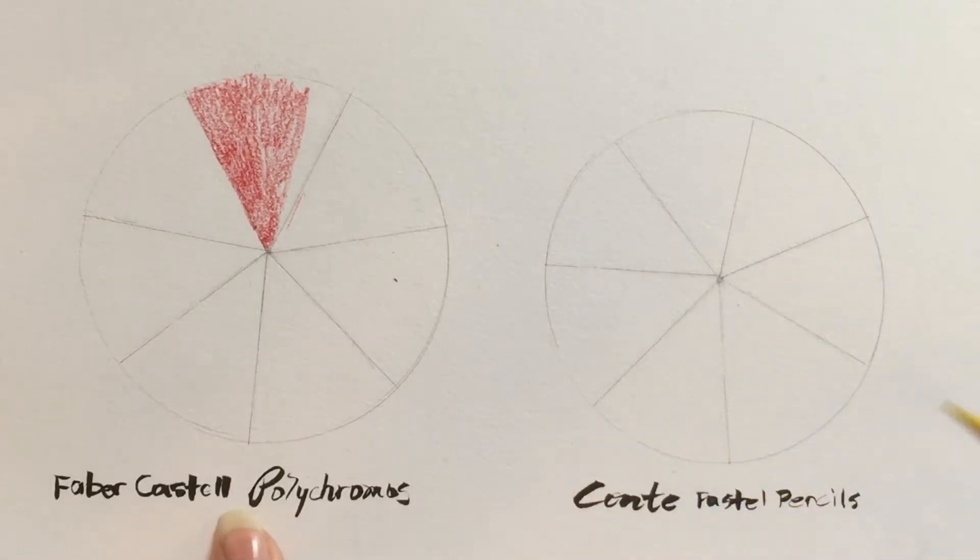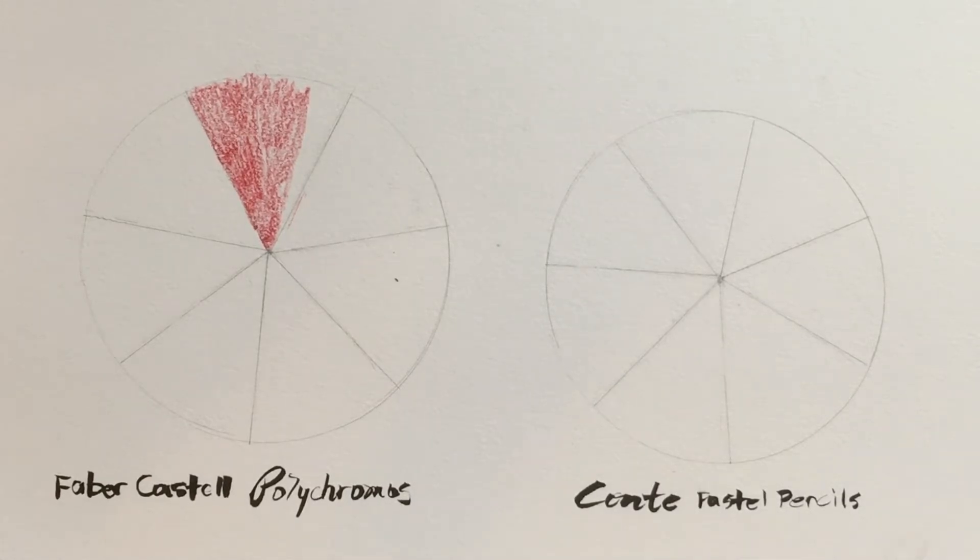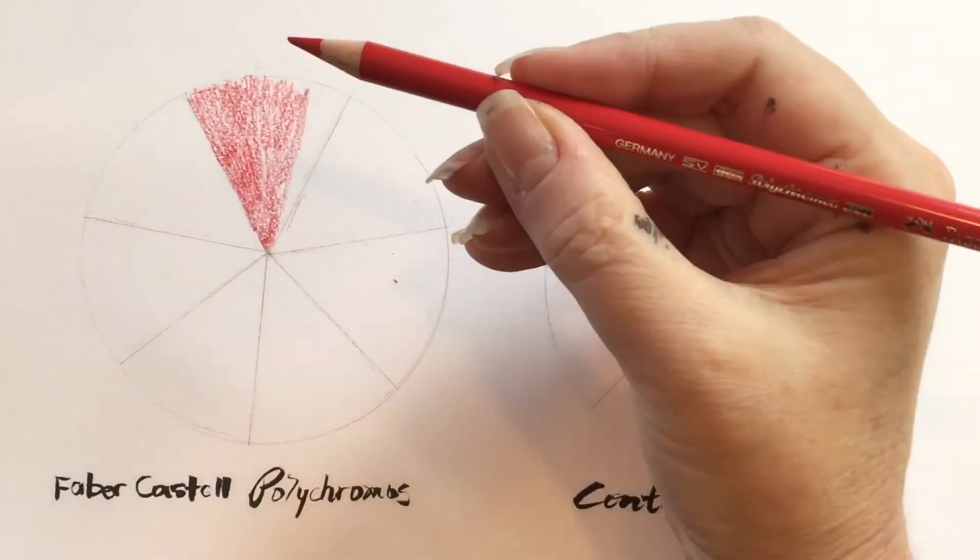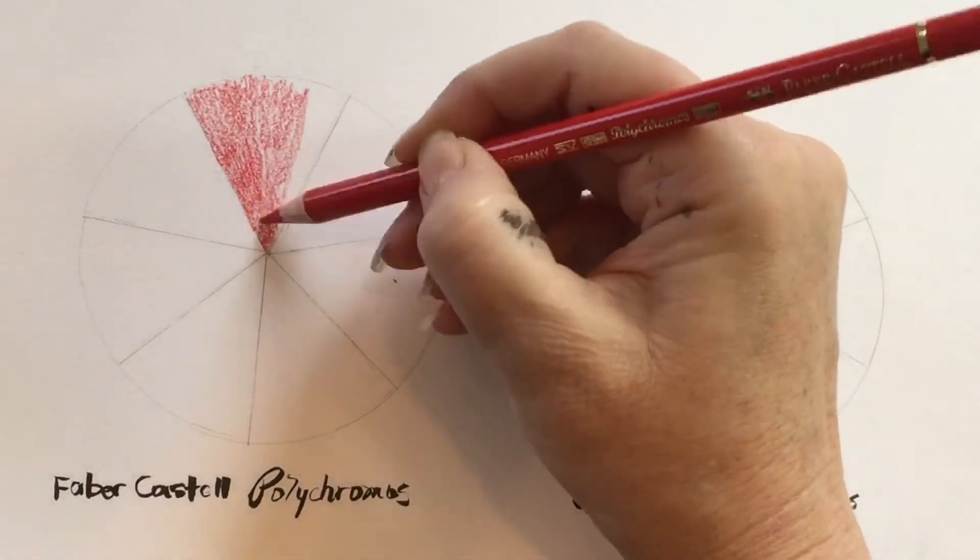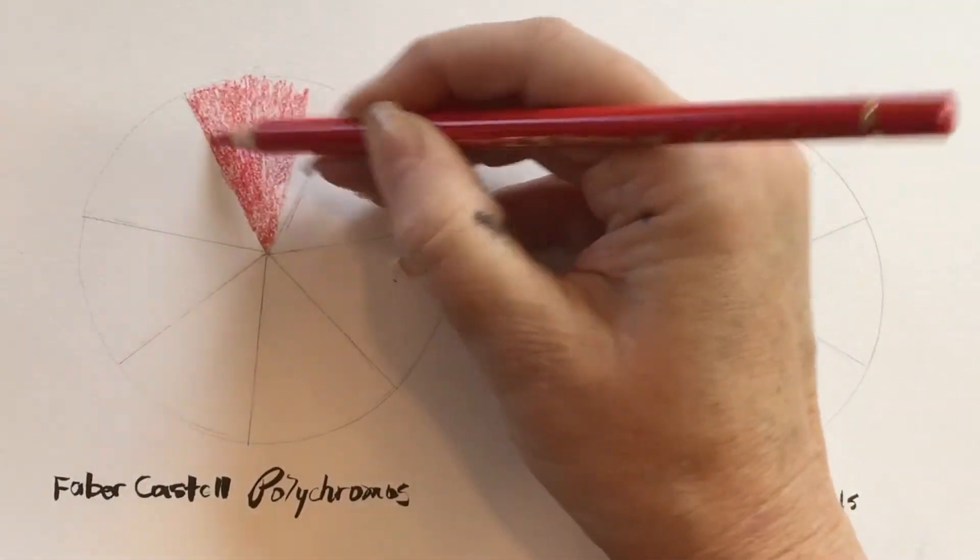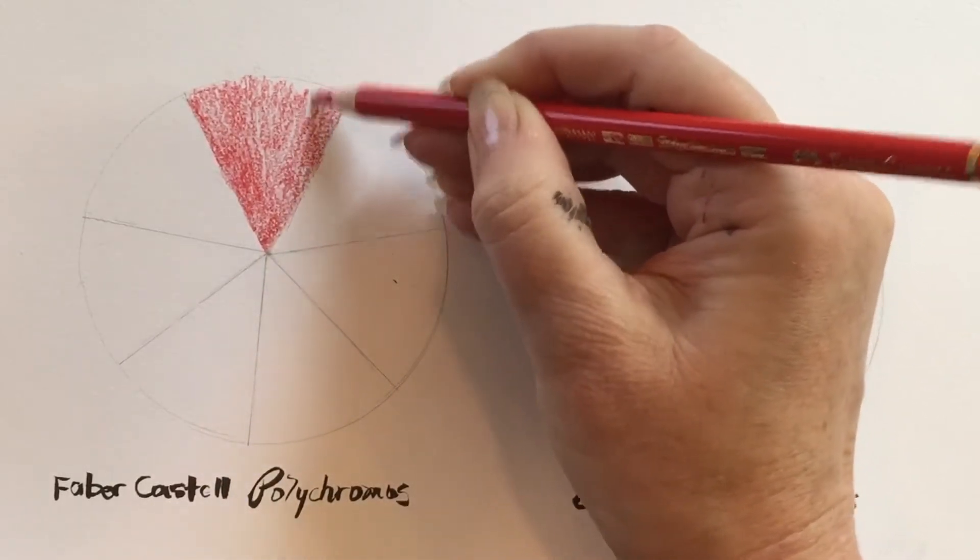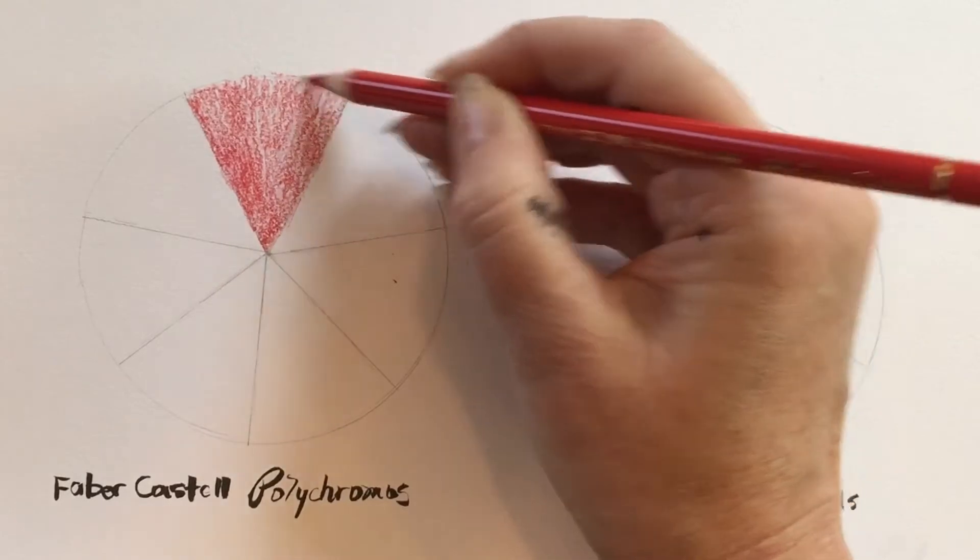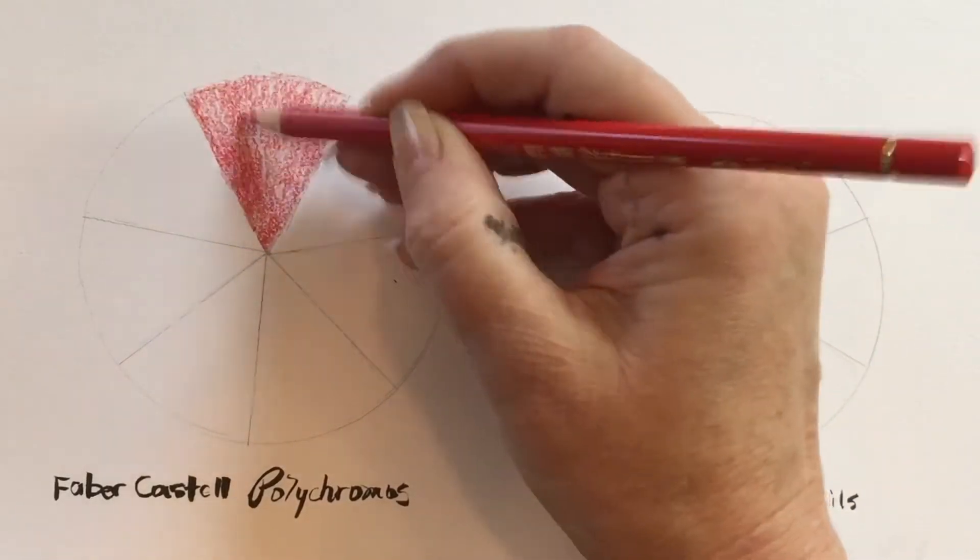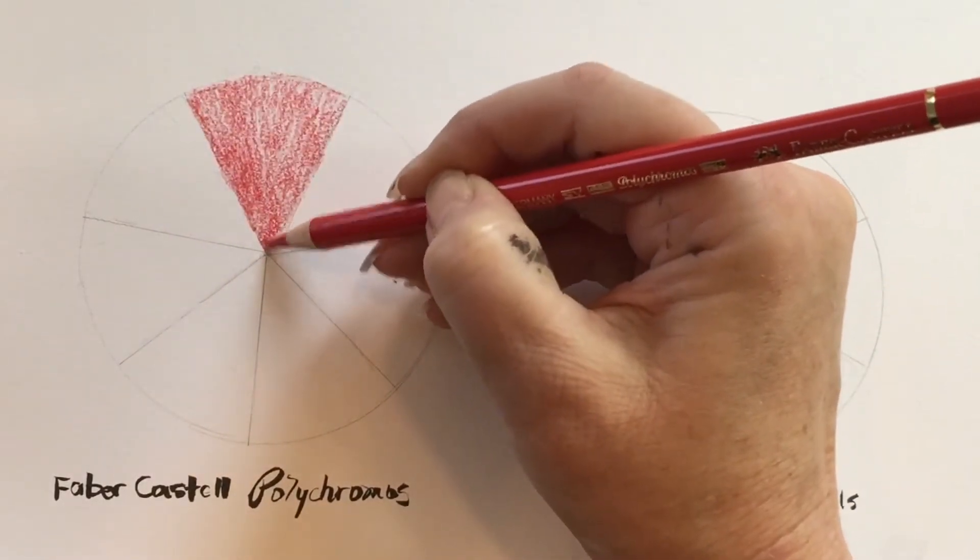I'm going to compare the Faber-Castell Polychromos pencils to the Conti Pastel pencils. I know it's not apples to apples, but I wanted to show people the difference between regular colored pencils. And these are Faber-Castell pencils. They're very nice pencils, but they are very different from the Conti or any pastel pencil. And I pick Conti specifically because the Conti pencils are very gritty.